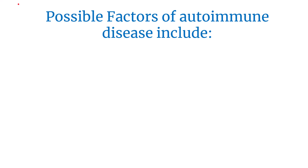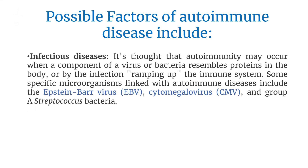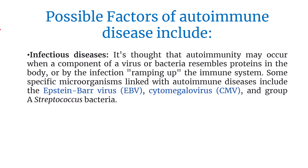The possible factors of autoimmune disease include infectious disease. It's thought that autoimmunity may occur when a component of a virus or bacteria resembles a protein in the body, or by the infection ramping up the immune system. Some specific microorganisms linked with autoimmune diseases are Epstein-Barr virus, cytomegalovirus, and group A Streptococcus bacteria.